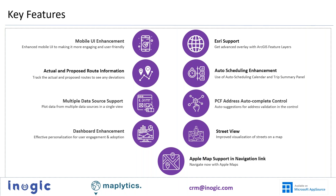We'll also look at enhancements to auto-scheduling, an existing feature where we've added a calendar-based view and trip summary panel to make it more informative. After that, we've supported the option of plotting multiple data sources at once — we removed the restriction of a maximum of three data sources, so with this latest release you can plot multiple data sources together on the same map.